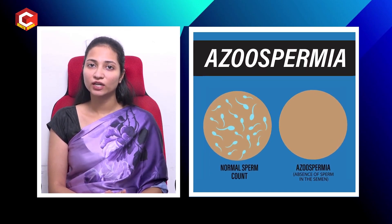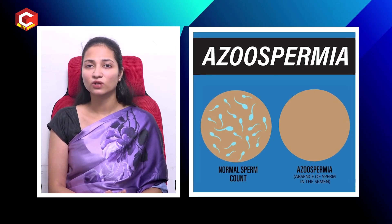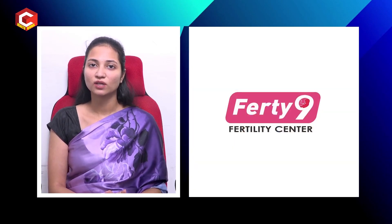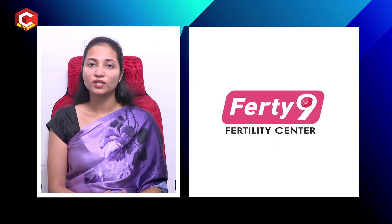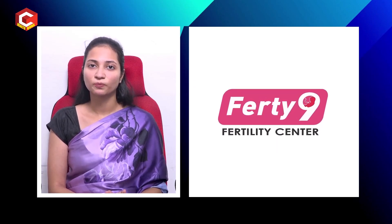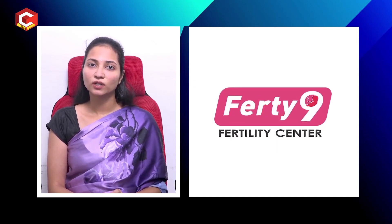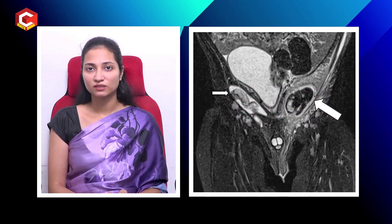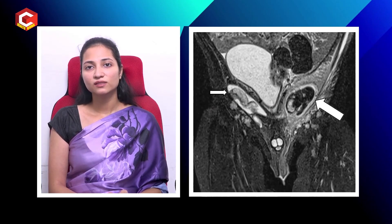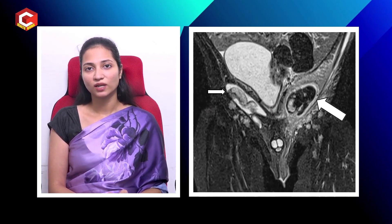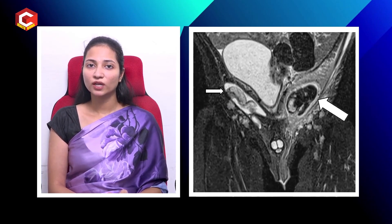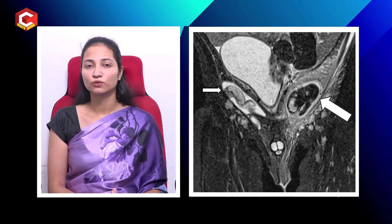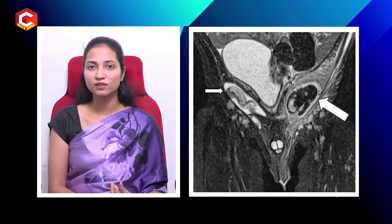When a patient is diagnosed with azoospermia, we first take a detailed clinical history with a dedicated andrologist. Some patients may have had congenital undescended testes — meaning the testes did not descend into the scrotal sac and remained in the abdomen — which produces high temperatures that affect sperm production.